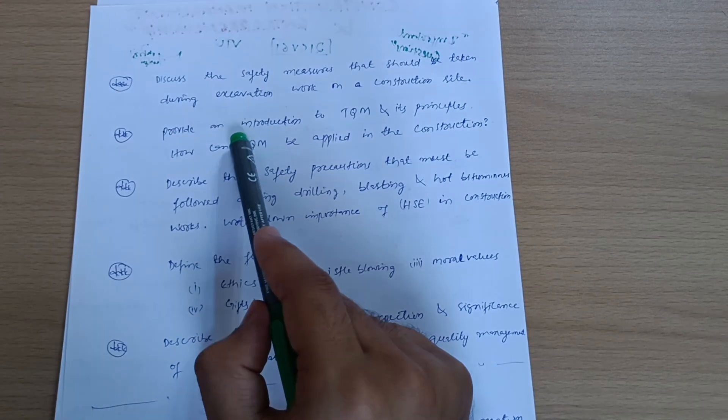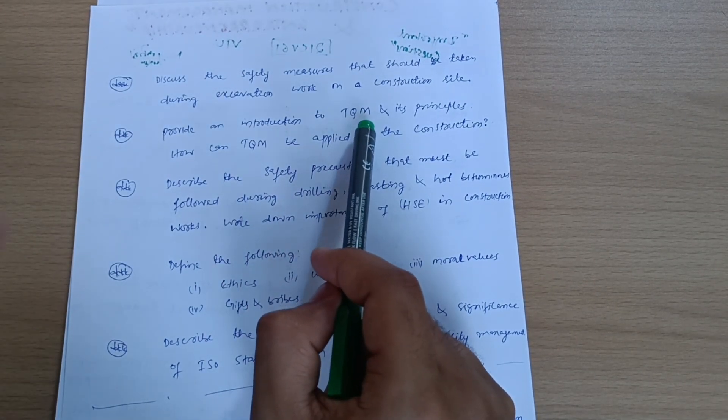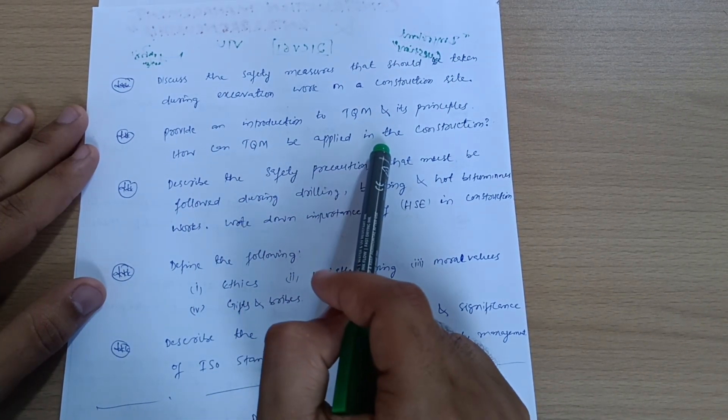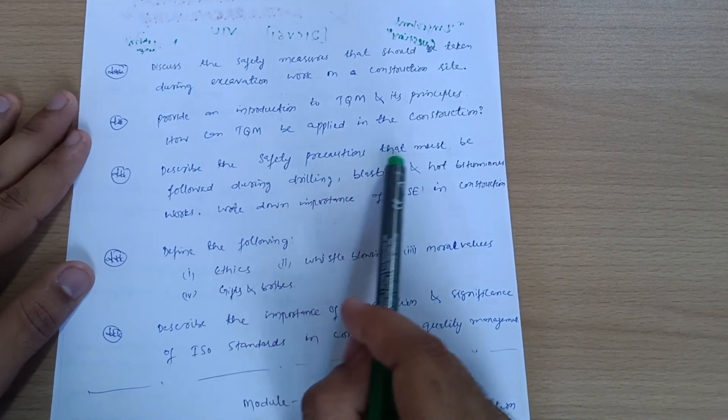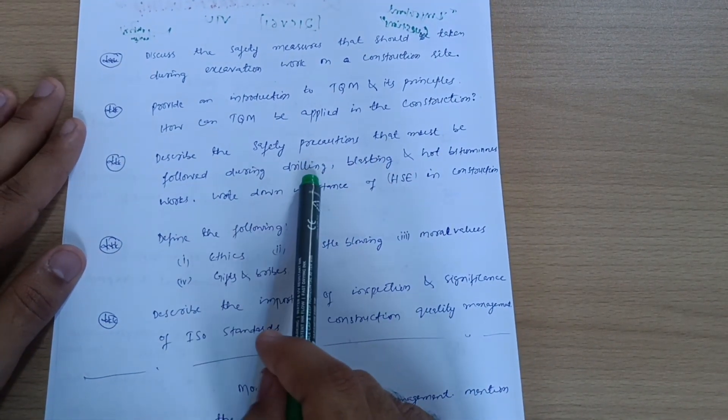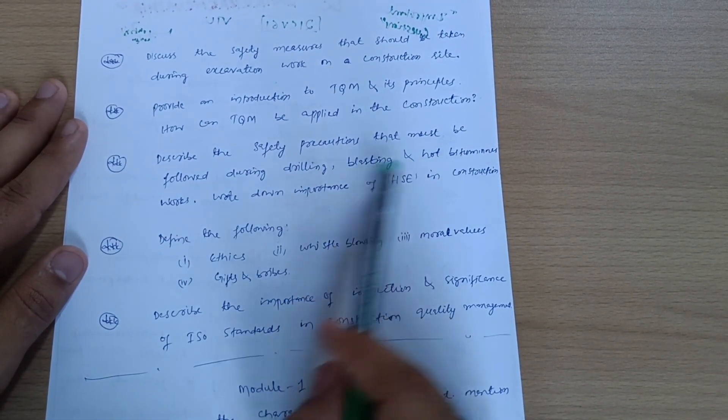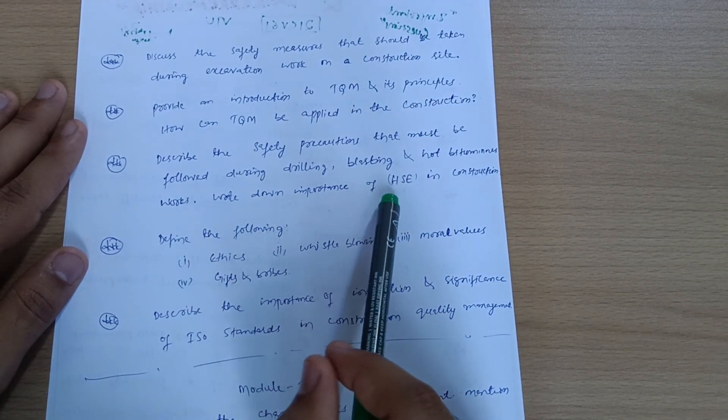Provide an introduction to total quality management and its principles. How can TQM be applied in construction? Next, describe the safety precautions that must be followed during drilling, blasting, and hot bituminous works. Write down importance of health, safety, and environment in construction.